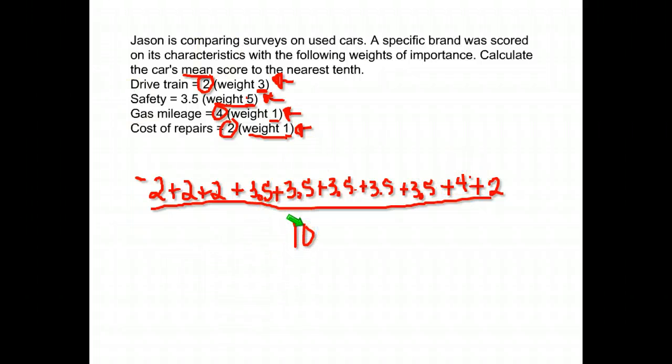So that is how we find an average. We add the numbers together and divide by ten. The only difference was we had different weights. So we put however many it listed its weight, we put that many numbers down. So let's add the top together. Two plus two plus two, plus 3.5 five times, plus four plus two. When you do that, we get 29.5 and we're going to divide that by ten and we'll have our answer.